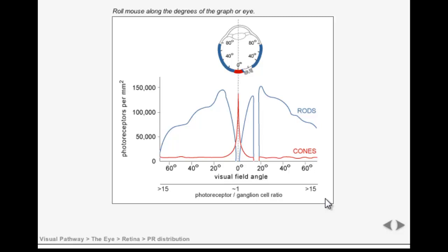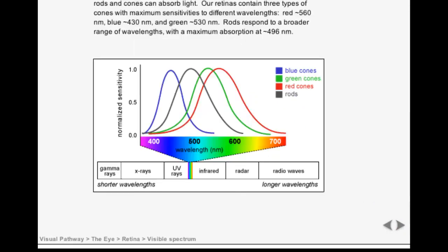The cones are also important for conveying color information about a stimulus. There are three types of cones. Each one responds best to light of a particular wavelength: either red, green, or blue.